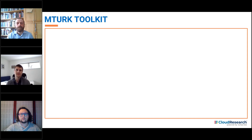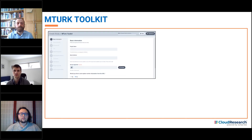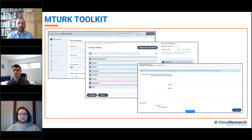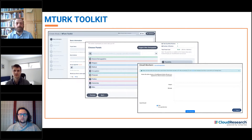The Cloud Research interface provides all sorts of tools that make running studies easier, like setting criteria for who is eligible or ineligible for a study, targeting participants based on previously profiled demographic information, and providing the ability to communicate with participants by email, which is critical for things like longitudinal studies. The Cloud Research system greatly simplifies setting up and managing MTurk studies by providing a more friendly user interface and streamlining many manual tasks.